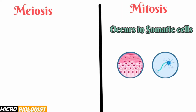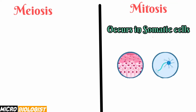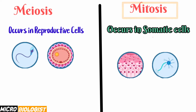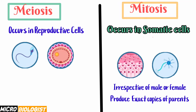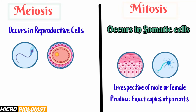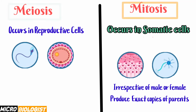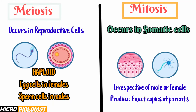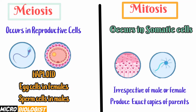Mitosis occurs in somatic cells and meiosis occurs in reproductive cells. Mitosis, irrespective of whether the individual is male or female, gives rise to somatic cells which are exact copies of parent cells. On the other hand, meiosis occurs in males and females, giving rise to haploid sperm and egg cells respectively.